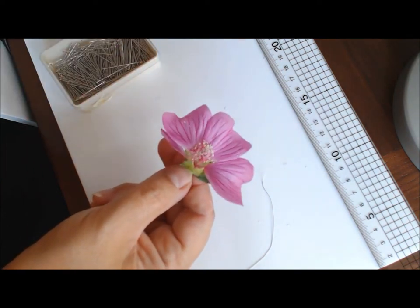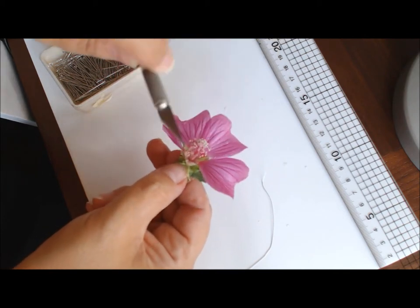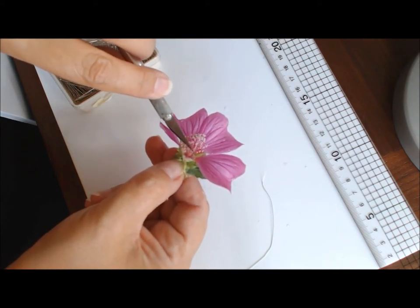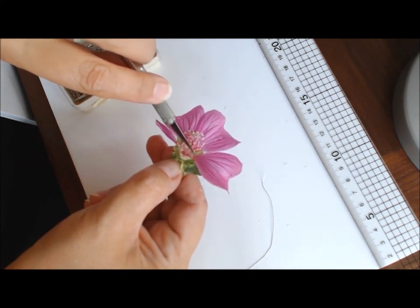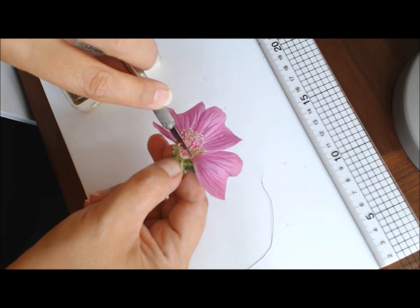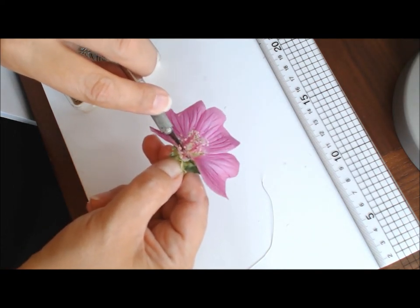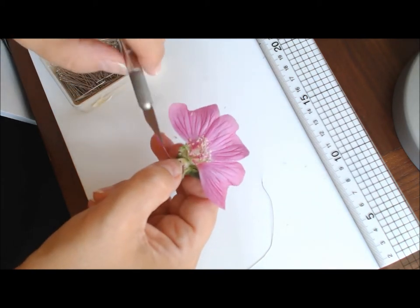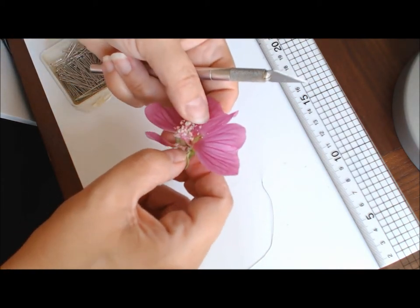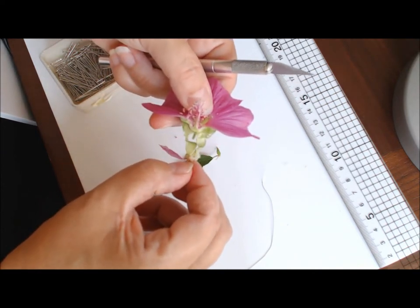Obviously, the smaller the flower is, the more difficult this is. I've chosen a large flower to make it easier to show you. So I'm trying to cut through the column without going too far through it. And that's going through it, down the center.